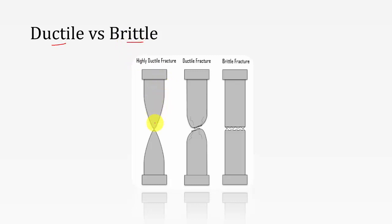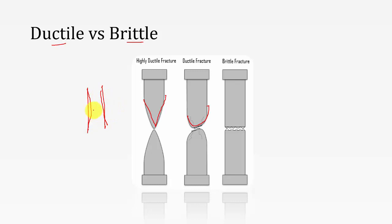High ductility means the material deforms to a greater extent before failure. Low ductility means it deforms only a small amount, including neck formation where the diameter reduces at that point. In brittle failure there is no deformation — the material simply fails without allowing any deformation. This is the difference between ductile failure and brittle failure.